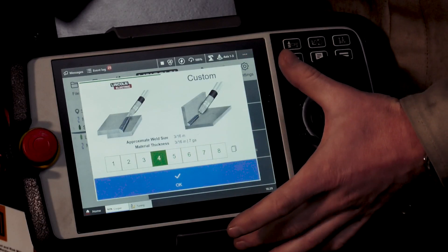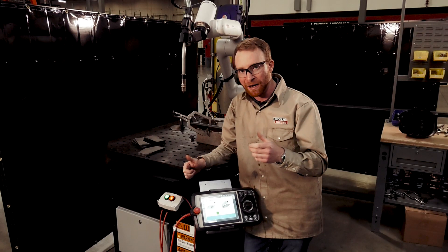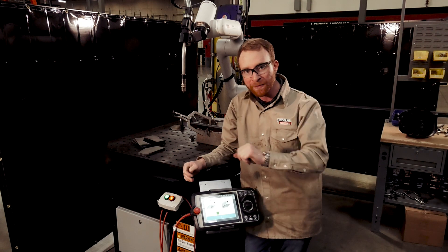will automatically have a weave. If you're doing thinner material and you still want to have a weave, we're going to have to create that into a custom setup. Again, call our tech support line to go into the details for that.